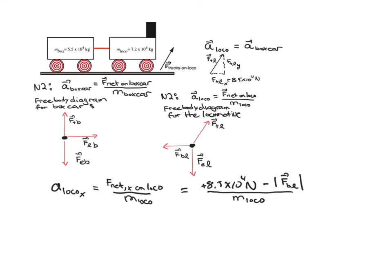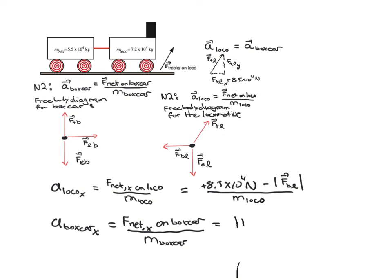Let's do the same thing with the boxcar. According to Newton's second law, the X component of the boxcar's acceleration equals the X component of the net force on the boxcar divided by the mass of the boxcar. We can write that as the magnitude of the force that the locomotive exerts on the boxcar divided by the mass of the boxcar, because there's only one force acting on the boxcar that has a horizontal component. And remember, the problem is asking us: what is the magnitude of this force? Can we deduce that? Well, we're almost there.